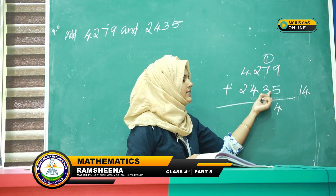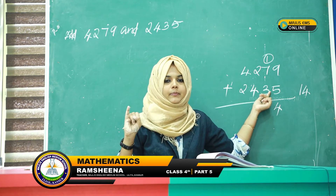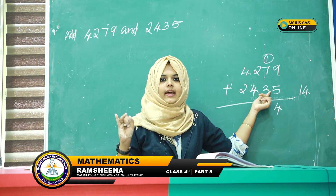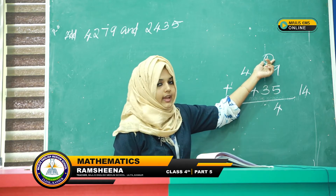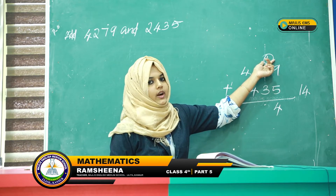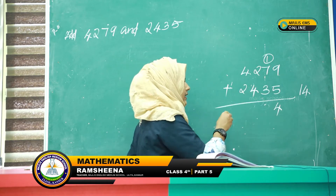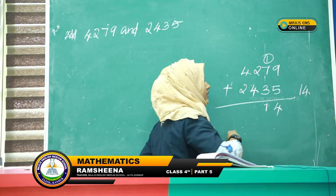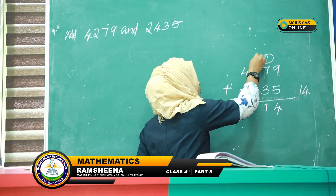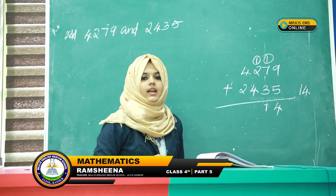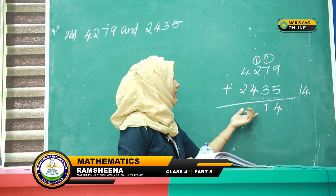Then we add 7 plus 3: 7, 8, 9, 10. Plus the carried 1 gives 11. We write 1 below the tens place and carry 1 to the hundreds place.